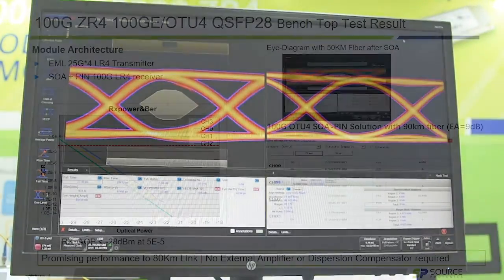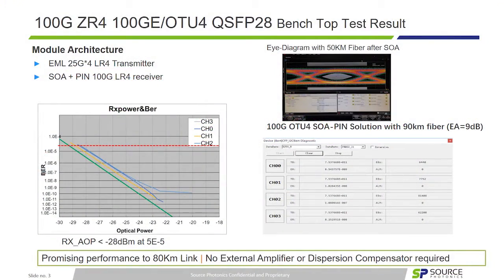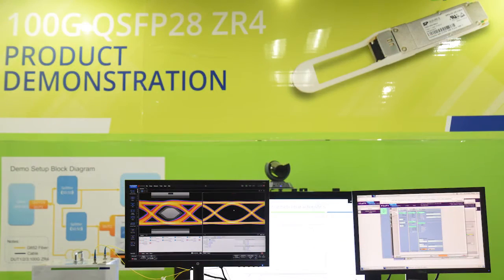The Source Photonics 100GB ZR4 QSFP28 is the industry's smallest, low cost, low power commercially available 100GB transceiver for 80km transmission.